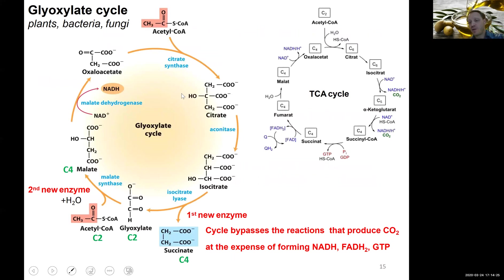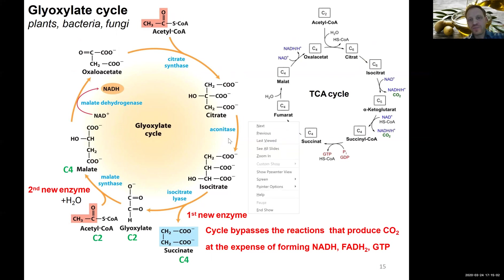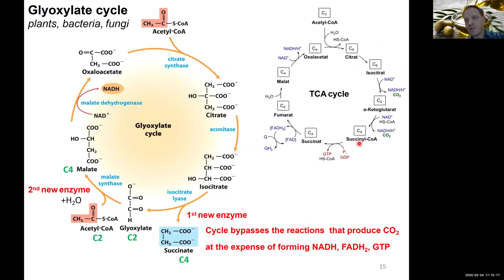Let's compare the glyoxylate cycle to the TCA cycle. On the right is the TCA cycle; on the left is the glyoxylate cycle, which occurs in plants, bacteria, and fungi — with some small differences, mostly focusing on the example in plants. The first step looks very familiar: acetyl-CoA and OAA come in through citrate synthase, making citrate — the exact same reaction as in the TCA cycle. Then aconitase converts citrate to isocitrate, again exactly the same as in the TCA cycle.